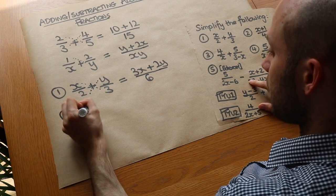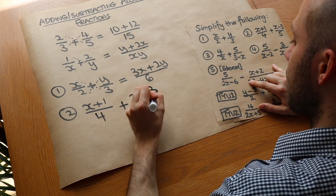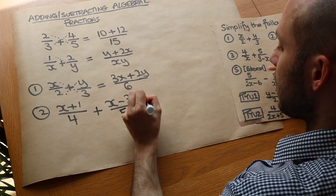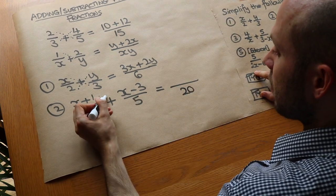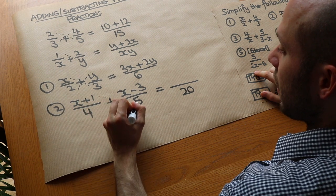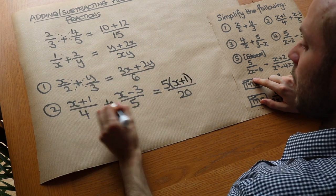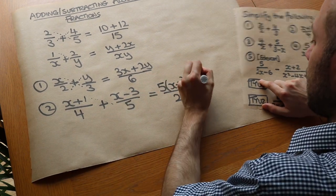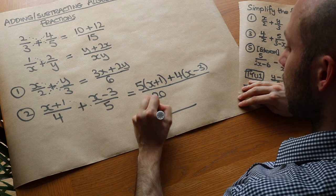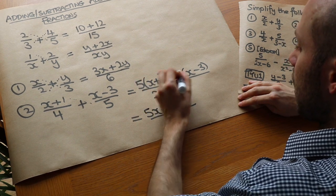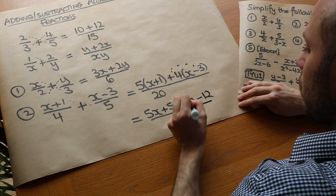Question 2: we've got (x+1)/4 plus (x−3)/5. Let's do the same thing — 4 times 5 is 20, so we multiply the denominators. Then we cross multiply the numerators. So (x+1) gets multiplied by 5 — I'll use brackets: 5 times (x+1). And then we've got add, and then 4 times (x−3). Now let's expand: we've got 5x plus 5, plus 4x minus — that's 4 times minus 3 — which is minus 12, all over 20.